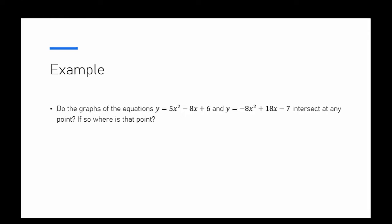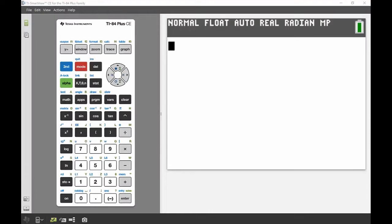Our first example is graphing the equations y equals 5x squared minus 8x plus 6, and y equals negative 8x squared plus 18x minus 7. We want to find out if they intersect at any point, and if so, what that point is. We'll look at how to set that up, quickly check on a graph, and see if there are any points of intersection.